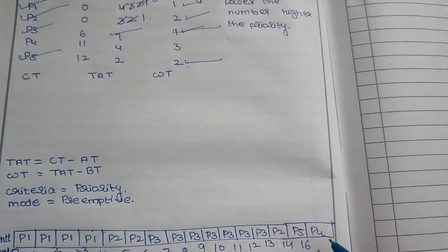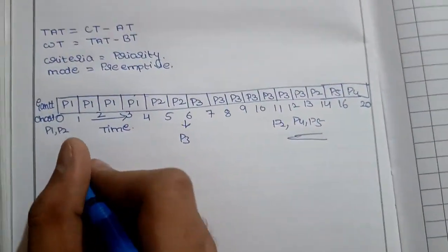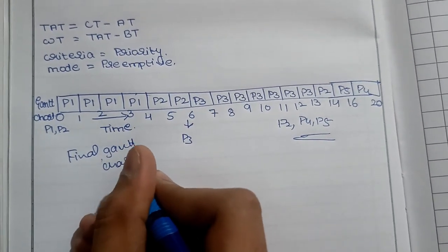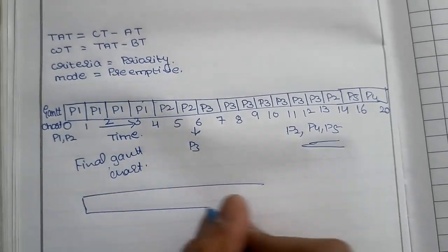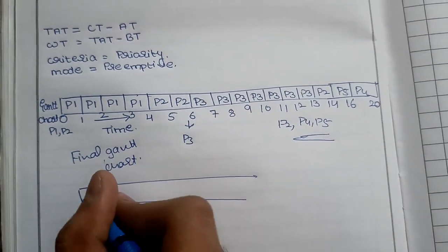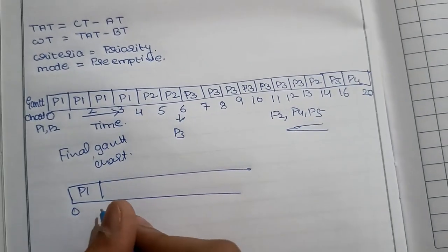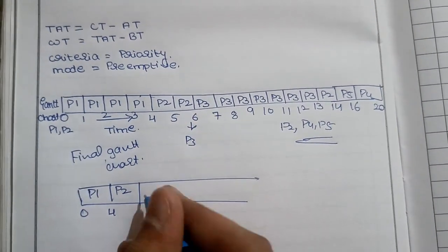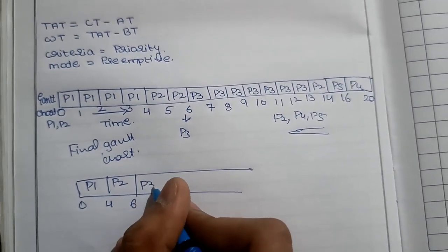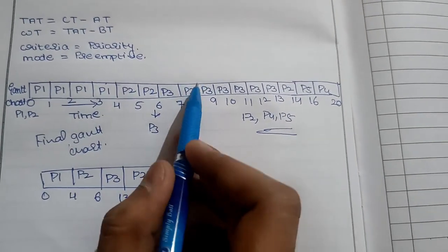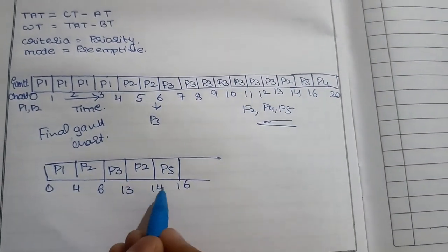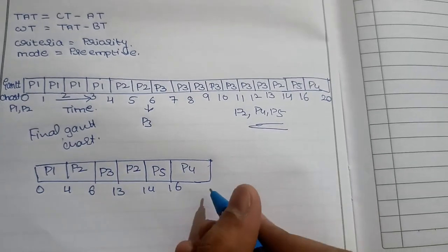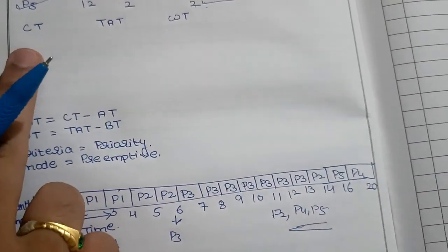At last, we process P4. The remaining burst time for P4 is 4, so 16 plus 4 equals 20. So the Gantt chart: P1 arrives at 0 and completes at 4. P2 runs from 4 to 6. Then P3 starts and runs from 6 to 13. Then P2 resumes from 13 to 14. P5 runs from 14 to 16. And P4 runs from 16 to 20.